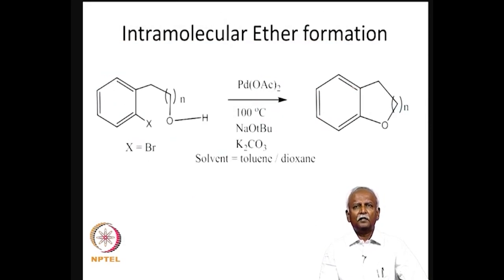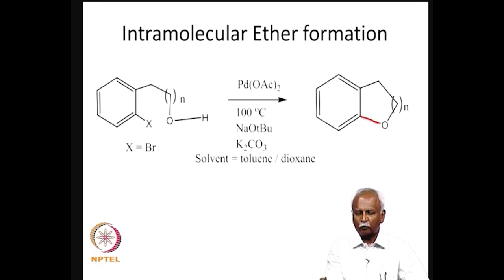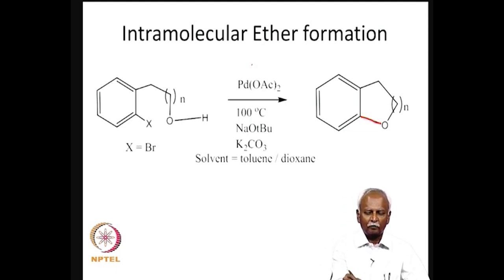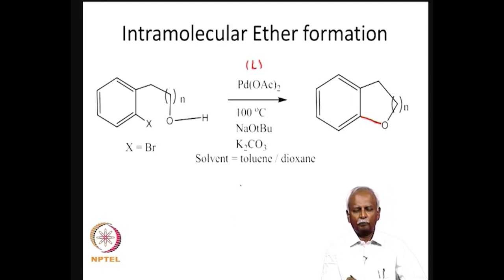Having discussed amine coupling, it is not very difficult to extend this one step further to C-O bond formation — ether formation. This intramolecular ether formation is in fact an exact analog of the C-N bond formation, and everything else would be identical in terms of mechanism and the ligands required. A phosphorus-stabilizing ligand, usually a PR₃, is used in this reaction as well.